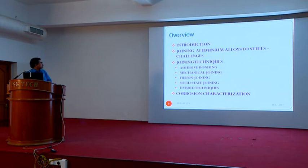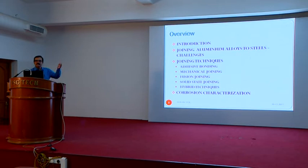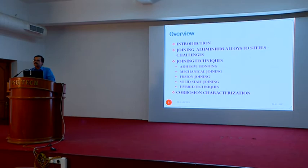Finally, if time permits, we will have some discussion on corrosion characterization, because once we join aluminum alloy and steel in dissimilar joints we cannot avoid galvanic couple formation and the associated increased corrosion.